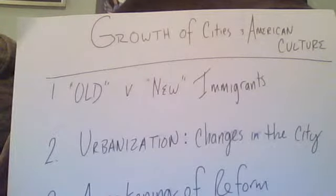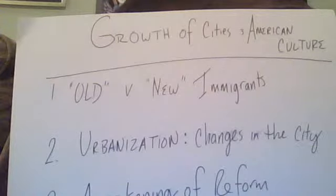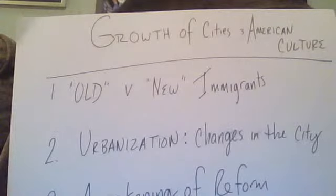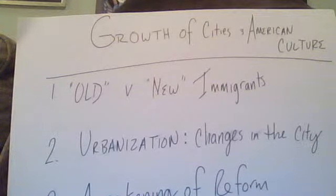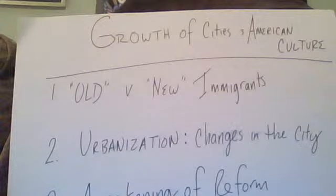Give me your tired, your poor, your huddled masses yearning to breathe free. The wretched refuse of your teeming shore. Send these, the homeless, tempest-tossed to me. I lift my lamp beside the golden door. This is a selection from Emma Lazarus' poem, The New Colossus.